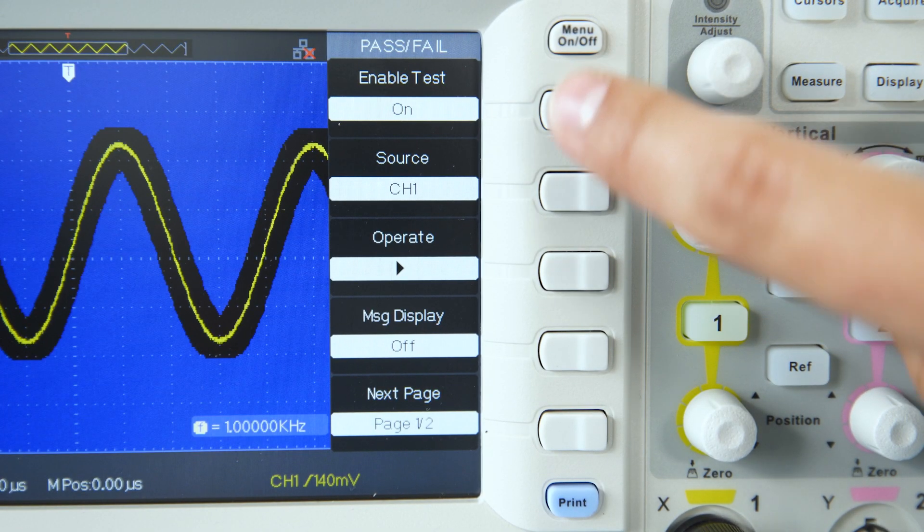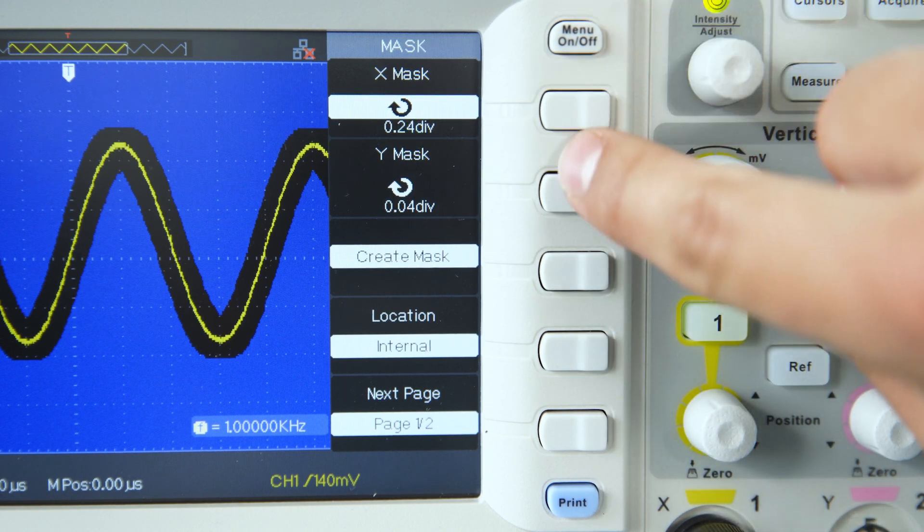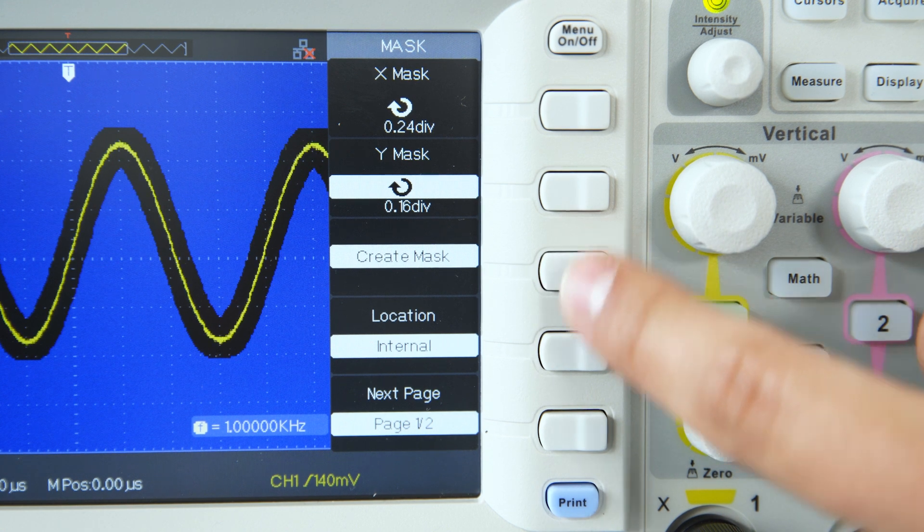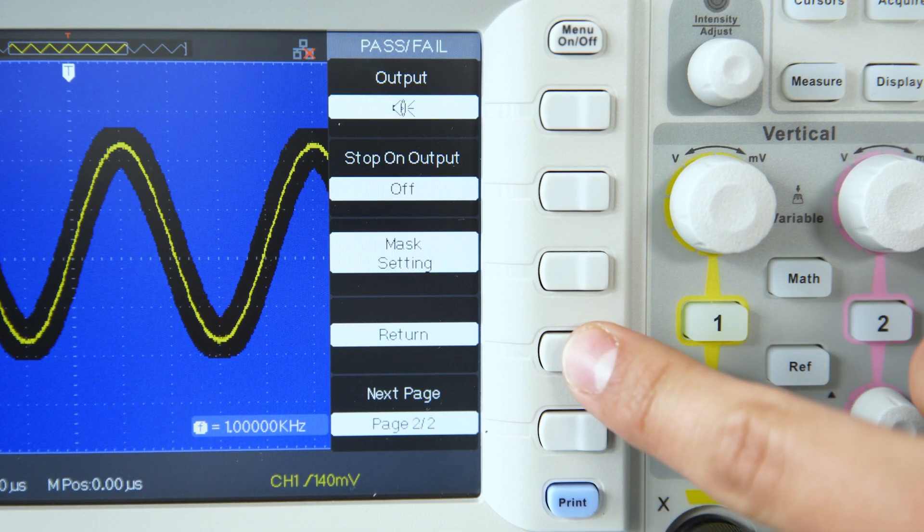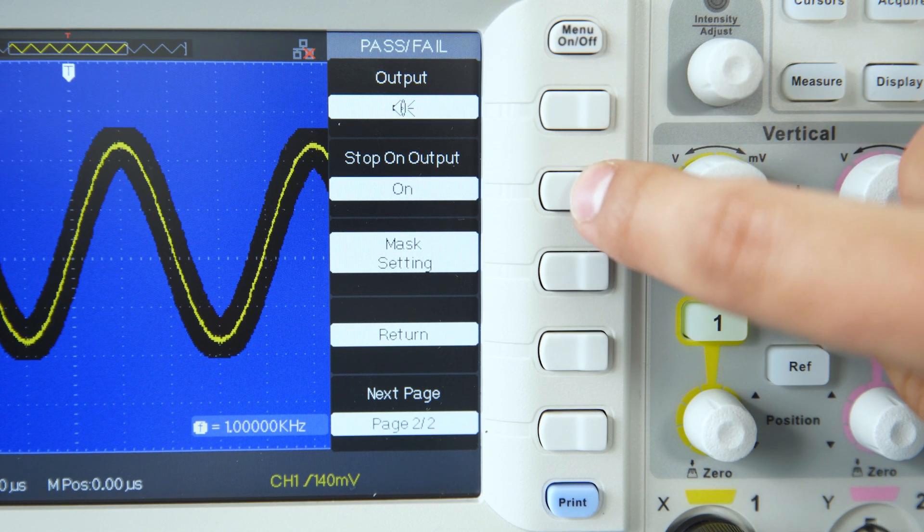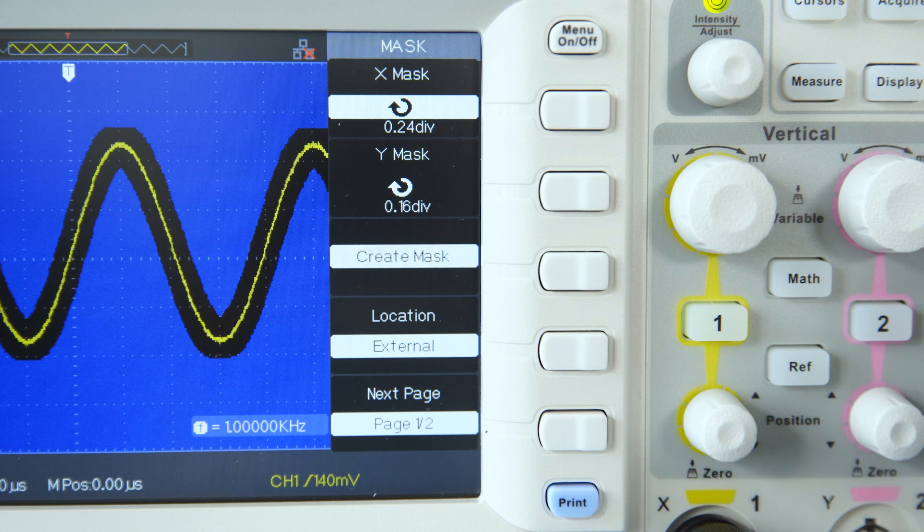In order to define the mask, first enable the test and go to the second page. Then in the Mask settings, define mask margins on X and Y axis and press Create Mask. Other options include sound output in case of failure or even full stop of the test. You can also save the mask for future use in internal or external memory.